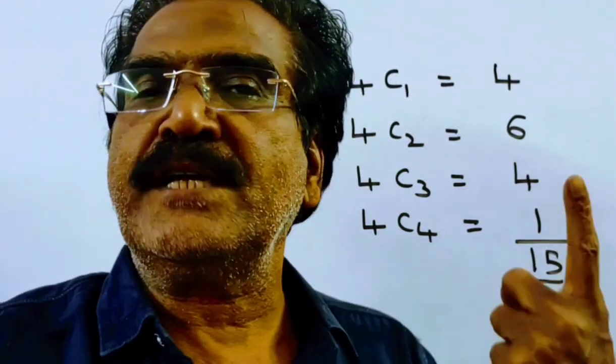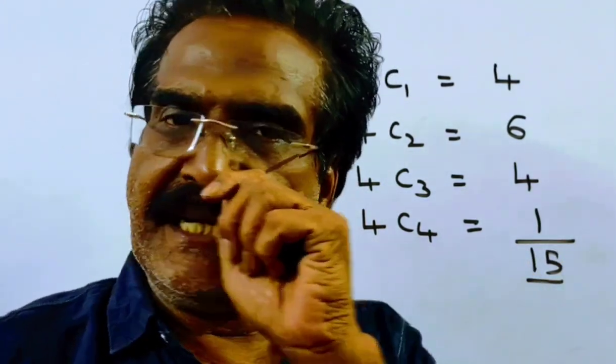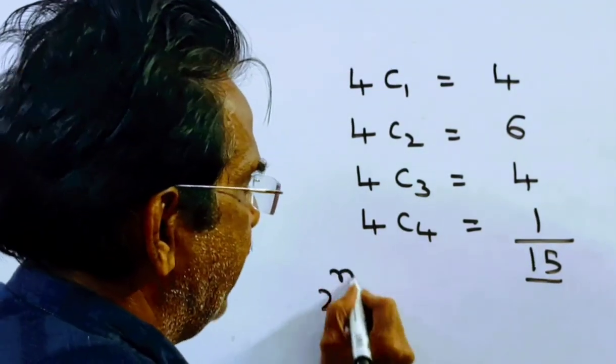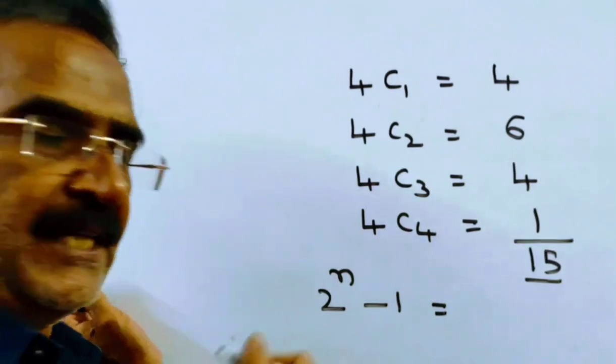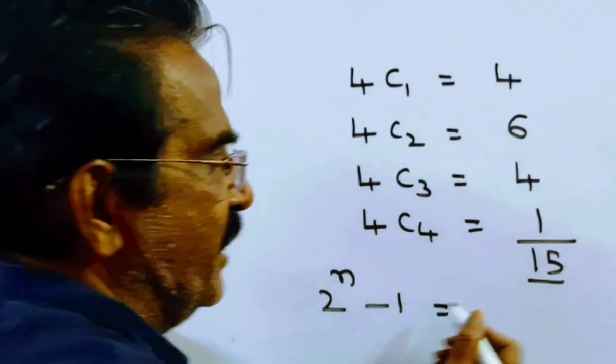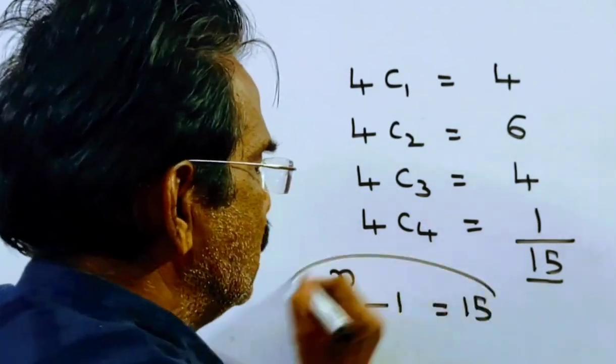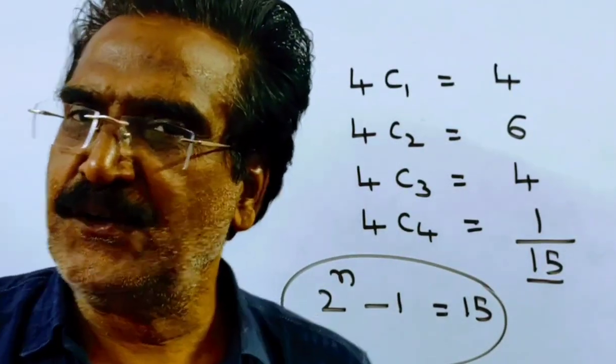Instead, you can use the formula 2^n - 1, where n is the number of different coins. So 2^4 - 1 equals 15. You can apply this formula as well. Thank you.